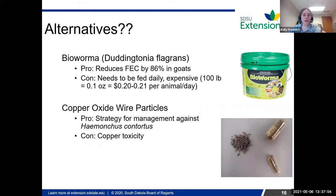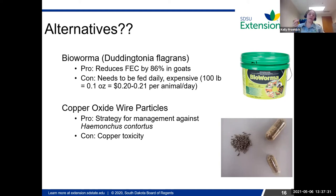Some other alternative products on the market — BioWorma is one product. It's a type of fungi, and it's been shown to be really effective, reducing fecal egg counts of goats by about 86%. Basically it traps the younger larvae of worms and prevents them from reproducing. The downside is it's super expensive. A hundred-pound animal needs about 0.1 ounce per day, which equates to about 20 to 21 cents per day, and it has to be fed daily to be effective.